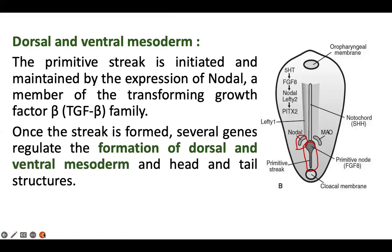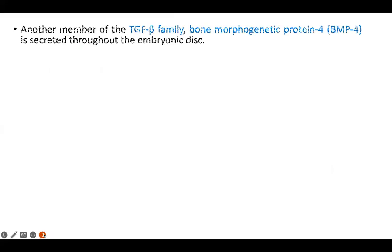Once the primitive streak is formed, several genes regulate the formation of dorsal and ventral mesoderm and head and tail structures. Another member of the TGF-β family — bone morphogenetic protein 4, that is BMP4 — is secreted throughout the embryonic disc.